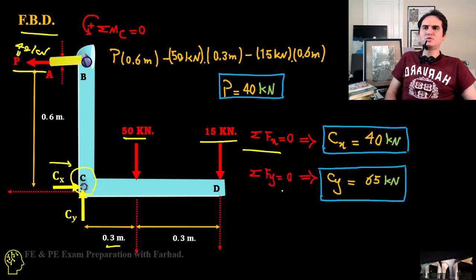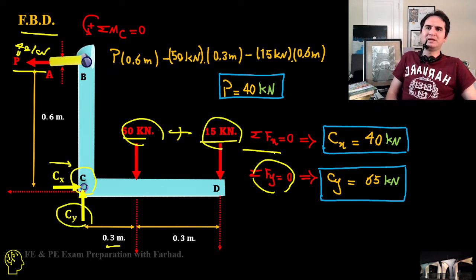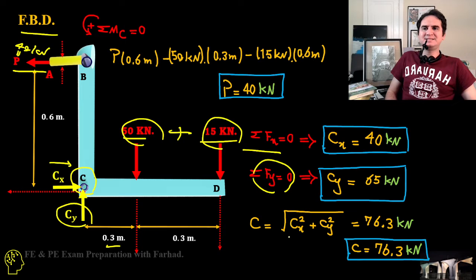Likewise, summation of forces in y-direction tells us C_y should cancel all the combination of these two forces, and that's simply 65 kilonewtons. So far we've calculated all the forces of our configuration. In that sense, C consists of two components x and y, and the unit value of that is the square root of C_x squared plus C_y squared, and that's C equal to 76 kilonewtons.